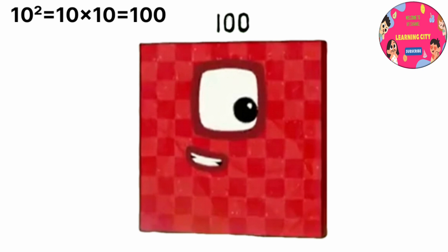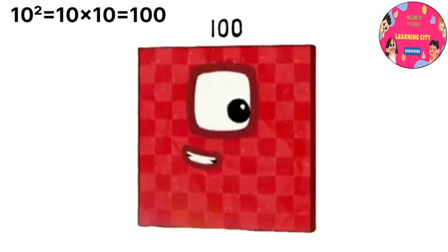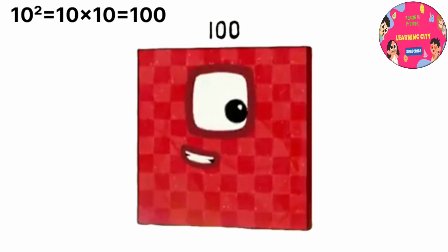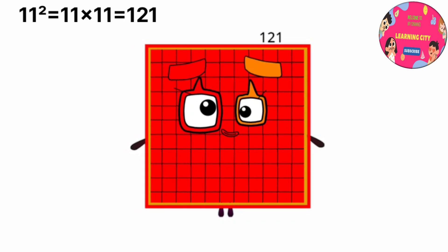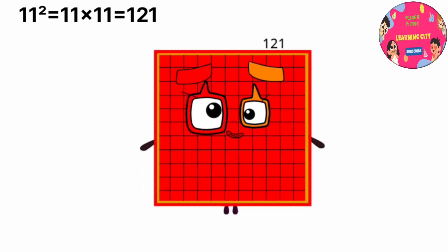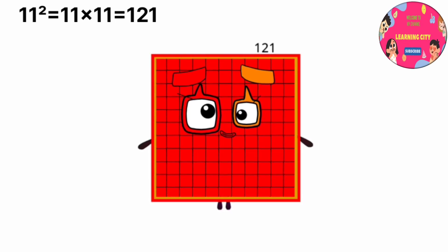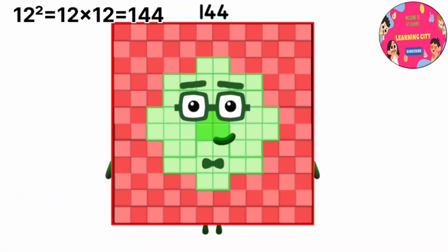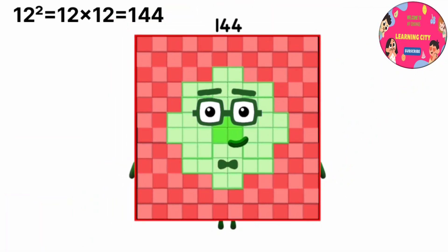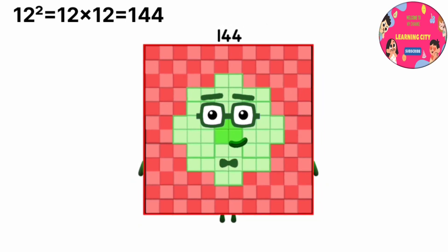10 power 2 equals 100, or 10 multiply by 10 equals 100. 11 power 2 equals 121, or 11 multiply by 11 equals 121. 12 power 2 equals 144, or 12 multiply by 12 equals 144.